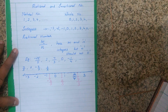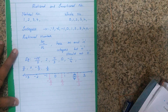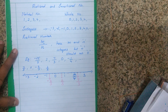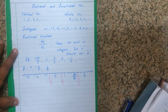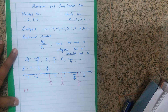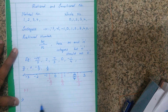I think all of you understood this. Now you can start doing Exercise 1.1. The first question is: show the following numbers on a number line. Draw a separate number line for each example because the denominators are different. I will do the first sum for you, and you will solve the rest.